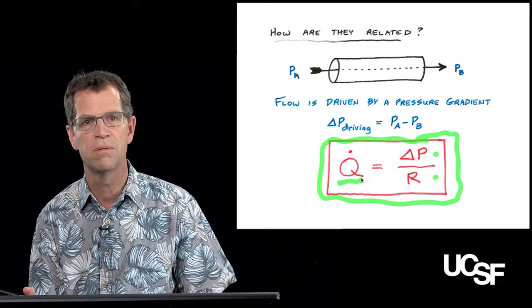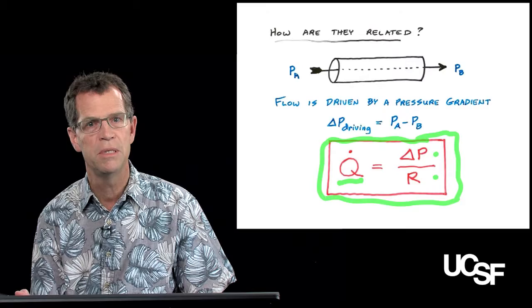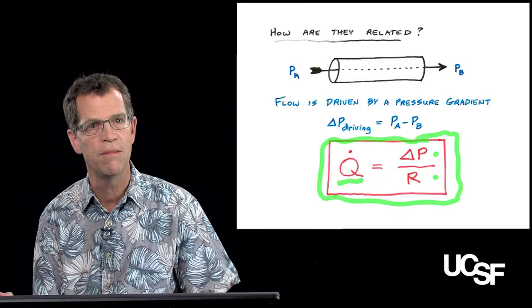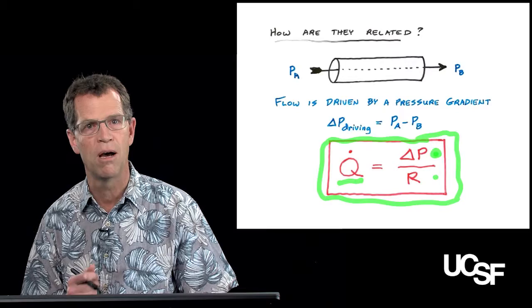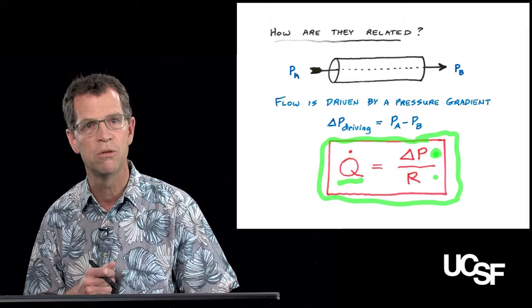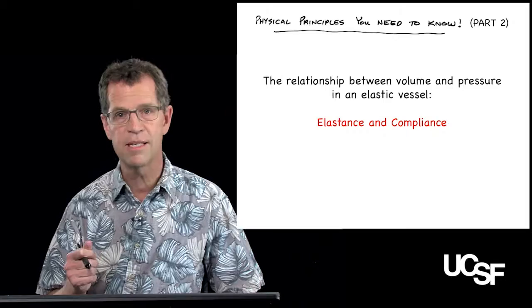Throughout this lecture and every lecture in the cardiovascular physiology section, we'll use this equation to show that whenever there's flow through anything in the cardiovascular system, it almost certainly depends on a pressure gradient between two points. This is a crucial equation that will come up repeatedly, and understanding this simple relationship is absolutely crucial for understanding cardiovascular physiology.